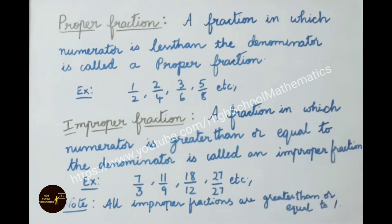Now let us see definition for improper fraction. A fraction in which numerator is greater than or equal to the denominator is called an improper fraction. Let us see the example: 7 by 3, 11 by 9, 18 by 12, 27 by 27 etc.